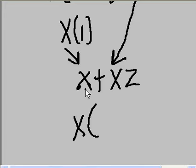x times what gives me x? 1. Bring down the OR. Now, x times what gives me xz? And the answer is z.